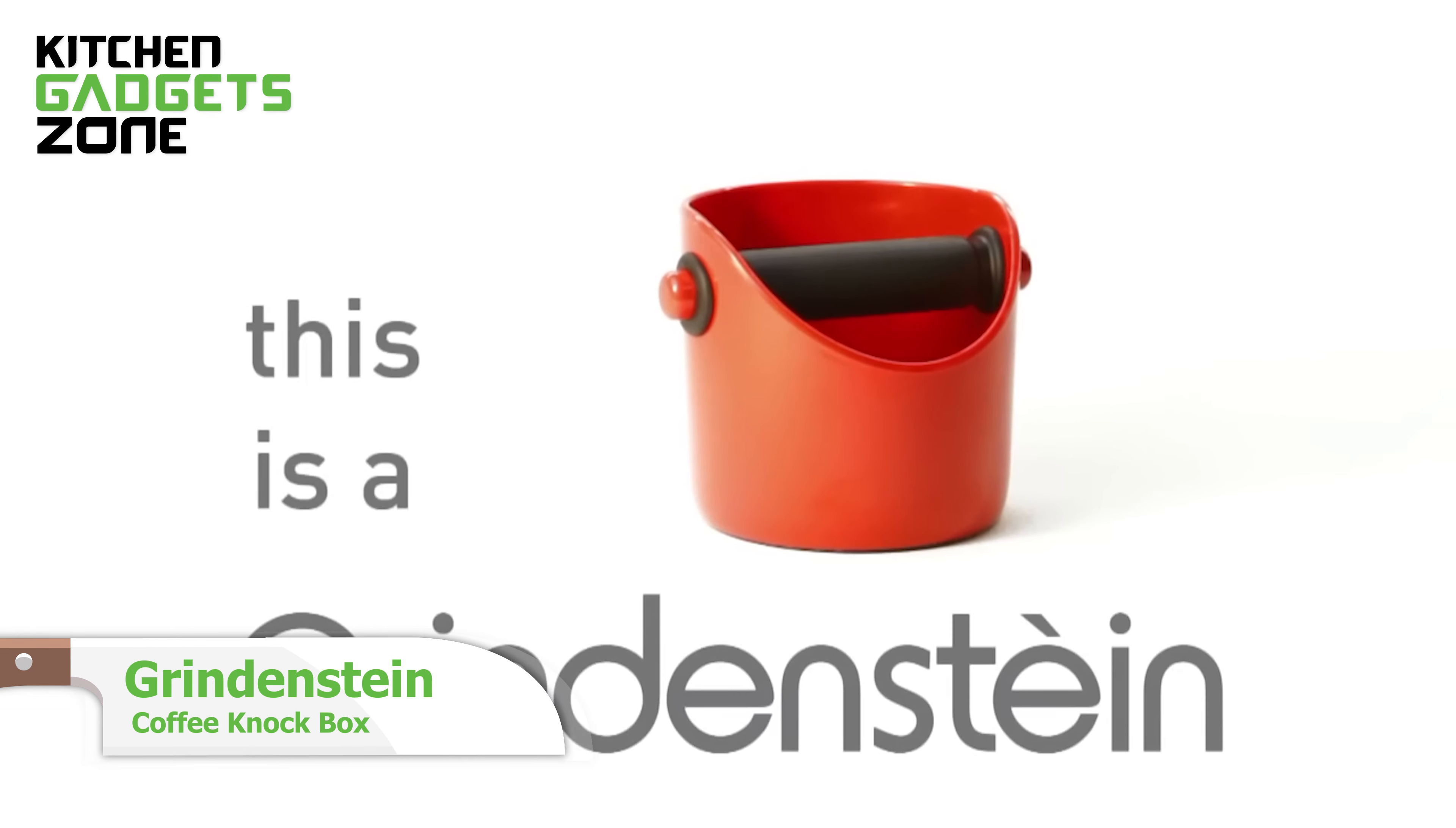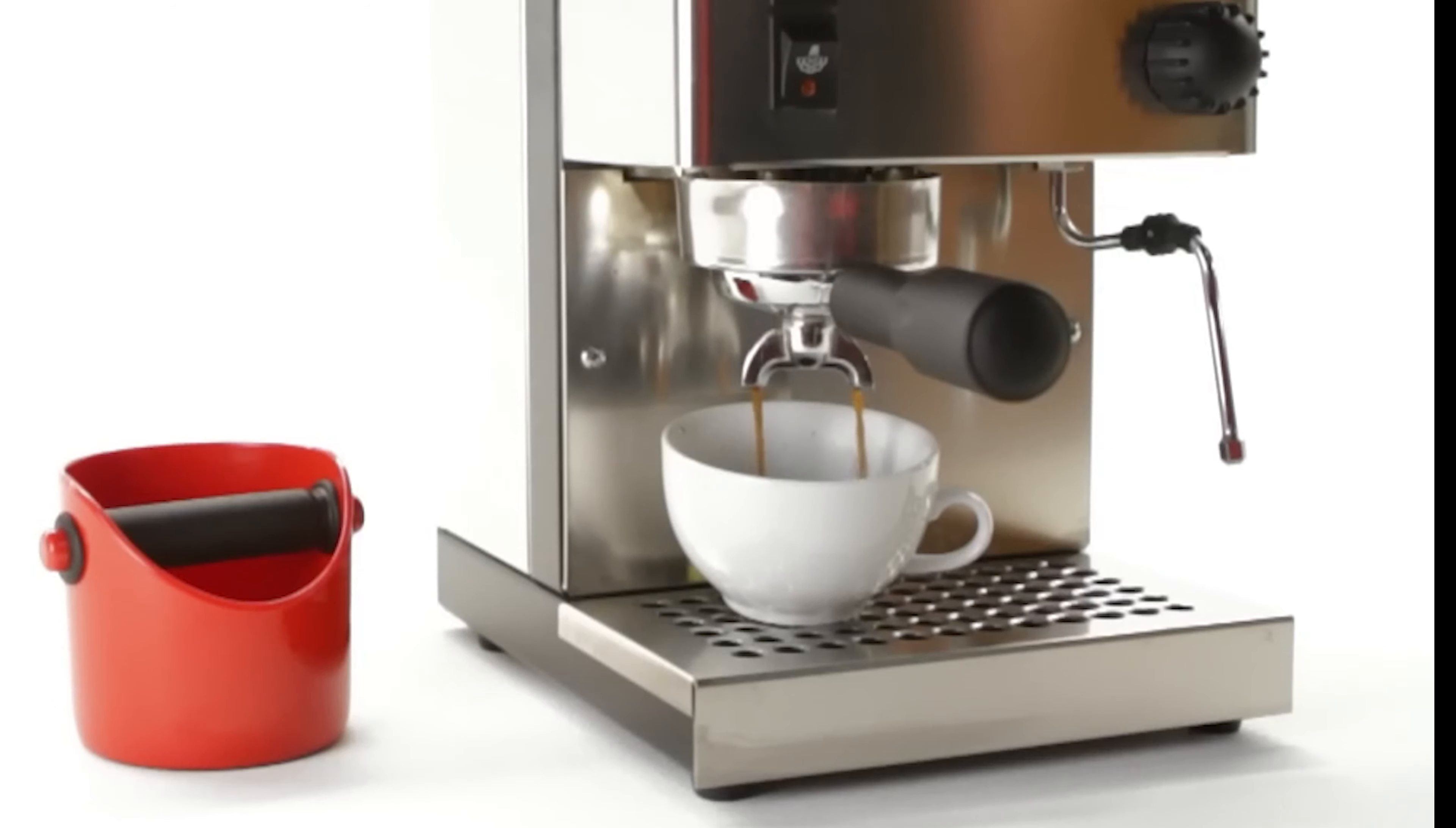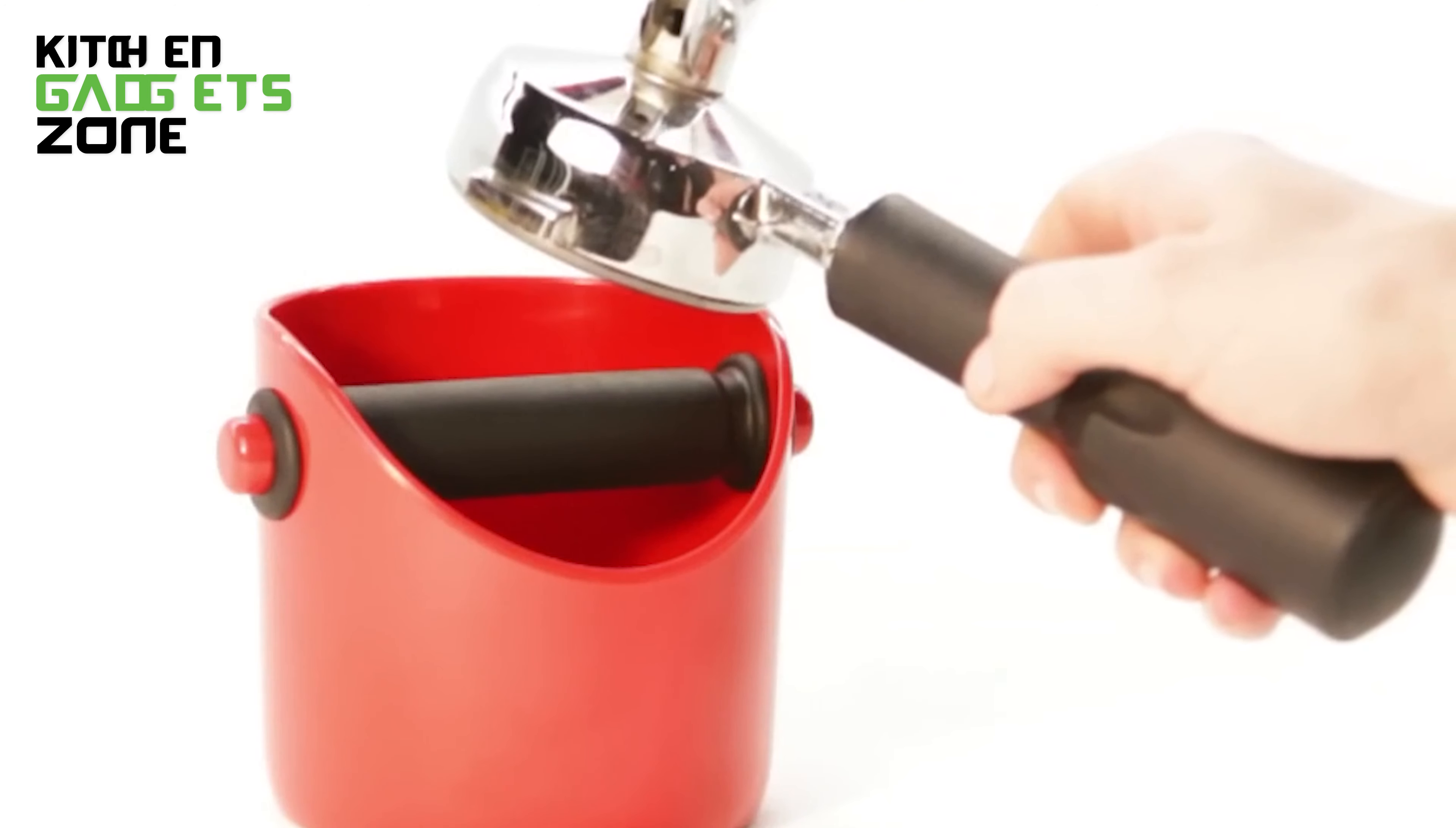Keep your coffee station clean and clutter-free with the Grindenstein Coffee Knockbox. This compact and sturdy knockbox is designed for easily banging out your coffee grinds, keeping your countertops and machines mess-free. Grindenstein tucks away right on the drip tray of your espresso machine for space-saving storage, ensuring it's always within reach when you need it.